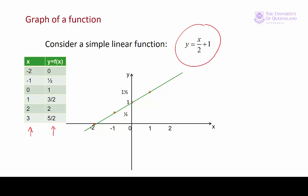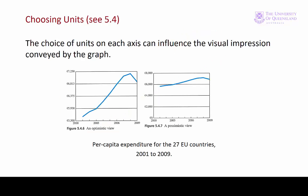The choice of scales on the axis can affect the way we interpret graphs. This is something we should be conscious of. For example, these two graphs present the same information.